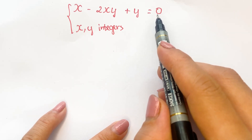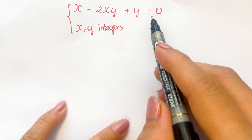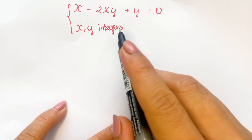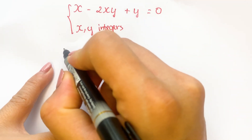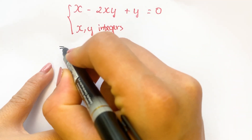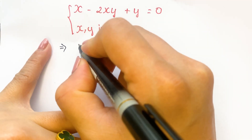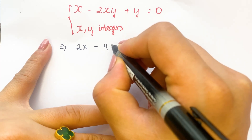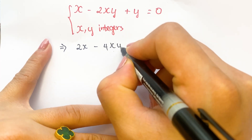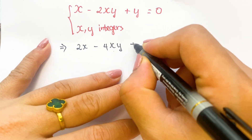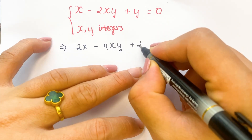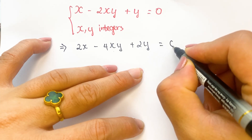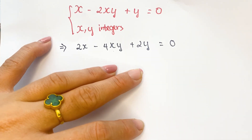Firstly, you need to multiply both sides by 2. Therefore, we can have 2x minus 4xy plus 2y equals 0.